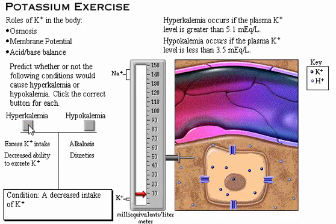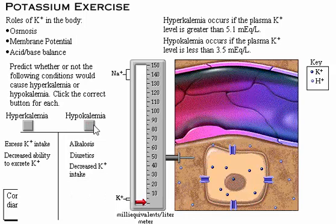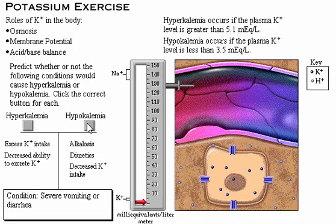A decreased intake of potassium, such as in an unbalanced diet, could cause hypokalemia, because the body absorbs potassium through food and beverages. Severe vomiting or diarrhea causing loss of potassium ion from the GI tract may also lead to hypokalemia.